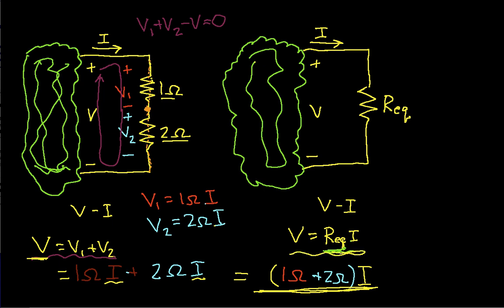Again, this guy up here is the voltage current relationship for my equivalent resistance. And you can see that if I call R equivalent the sum of 1 ohm plus 2 ohm, then I can say that these two circuits would have the same VI relationship.